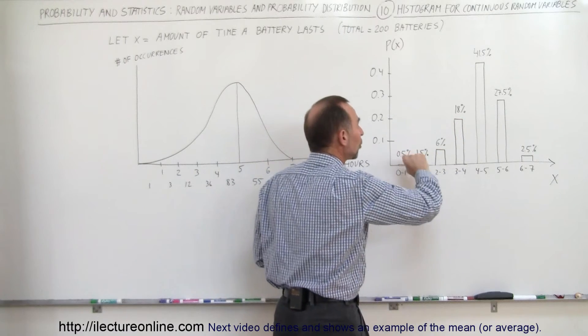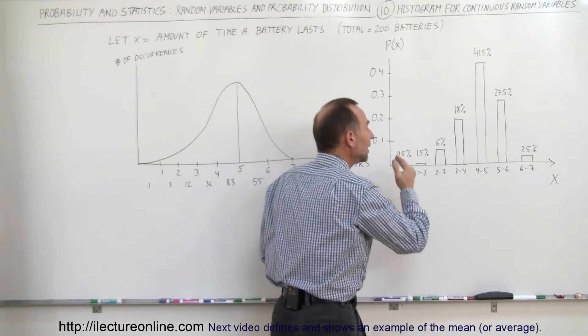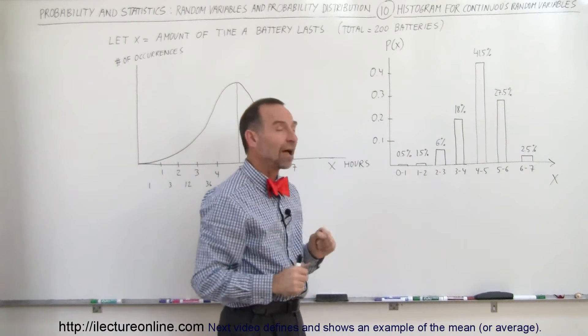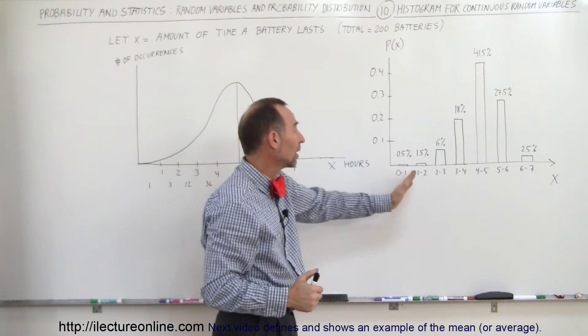The height of each column is proportional to the probability that you'll have a battery that lasts within that particular time frame in hours, so between zero and one hour and so forth.